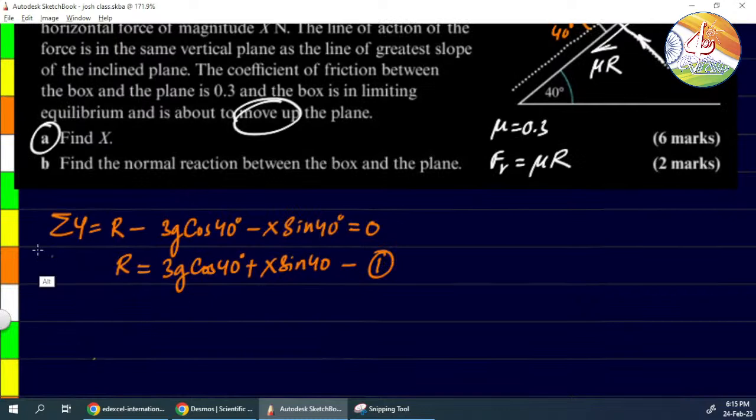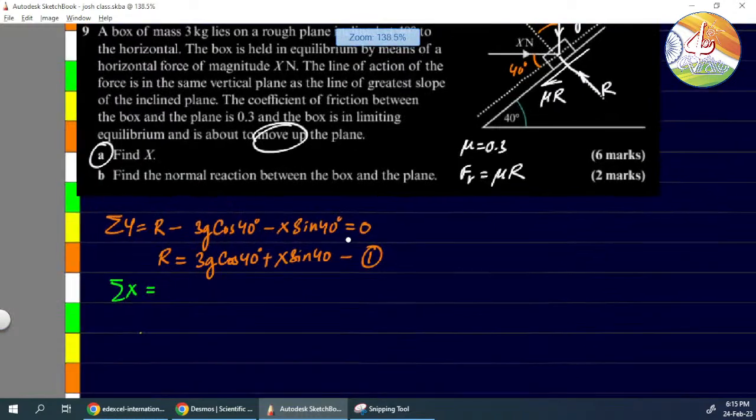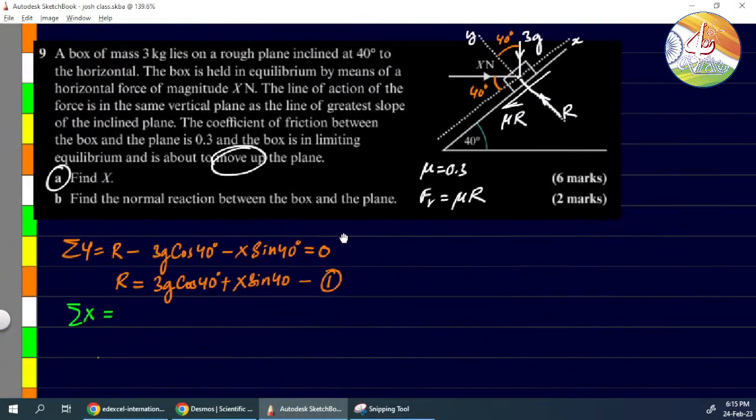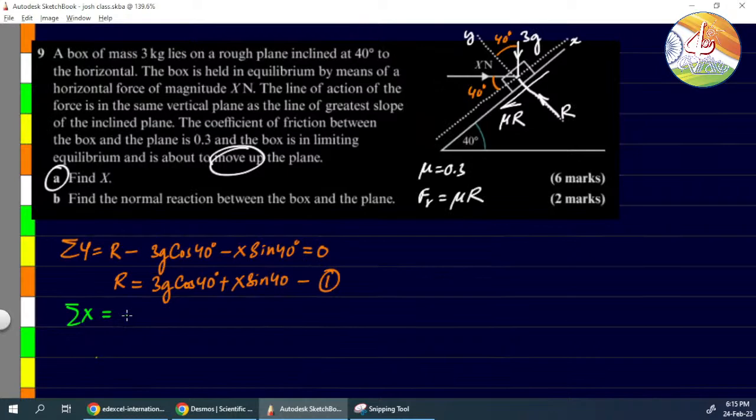Next, let us take sigma x, that is x-components of forces. X cos 40 will be the component acting in positive x-direction. Then 3g sin 40 is acting opposite to x-direction, so minus. Friction also.